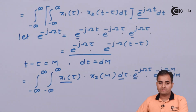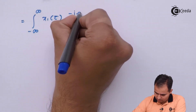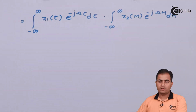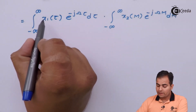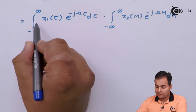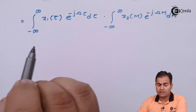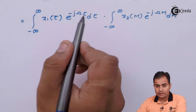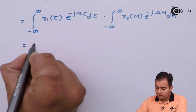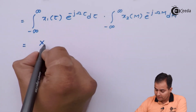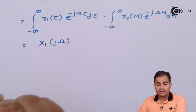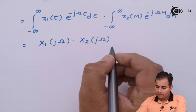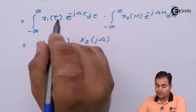Look here. I am going to keep x1(τ) e to the power minus jωτ dτ in one integration, and x2(m) e to the power minus jωm dm in another integration. From the definition of the Fourier transform, x1(τ) e to the power minus jωτ dτ integrated over all τ is nothing but the definition of the Fourier transform, so this whole thing is represented by X1(jω), whereas the second integral is also replaced accordingly, because both are nothing but the definition of the Fourier transform.